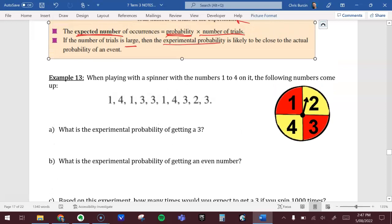When playing with a spinner with numbers one to four on it, we have four possibilities. The following numbers are when we actually do it. The first time I spin it, I get a one. The next time I spin, I get a four, and so on. These are actual results from when we did this experiment.